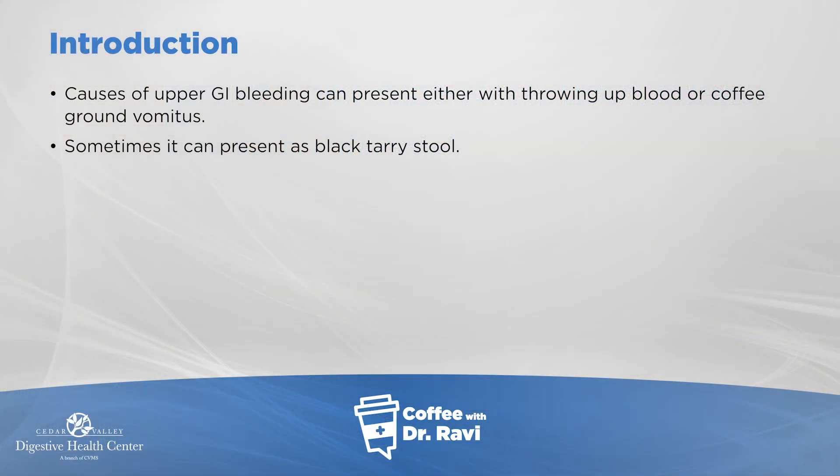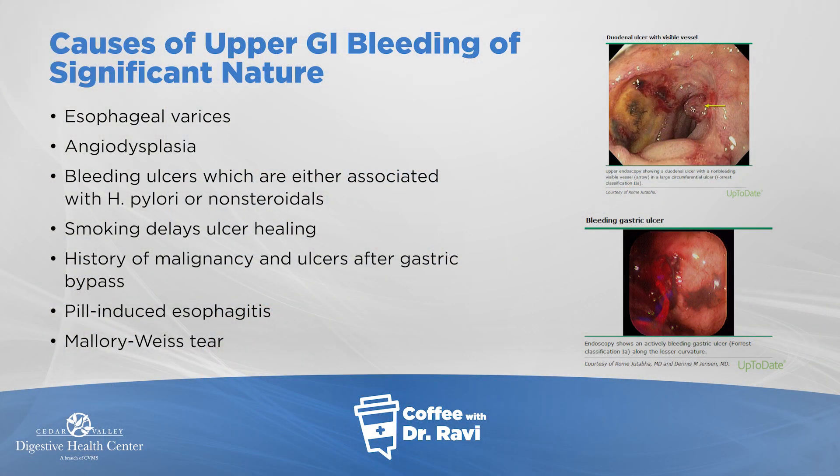The most common way upper GI bleeding presents is as black tarry stool. Normally, stool color can be brown depending on what we eat, but black, sticky, tarry-colored stool is what we're talking about. It's important to recognize that many things we take can cause the stool to become dark — common among them are Pepto-Bismol, iron, and sometimes spinach. Green vegetables can cause stool to become a little darker, but that's different from truly black-colored stool.